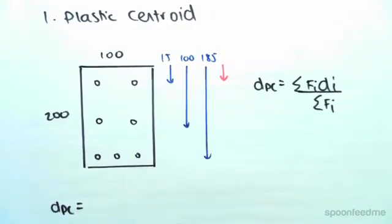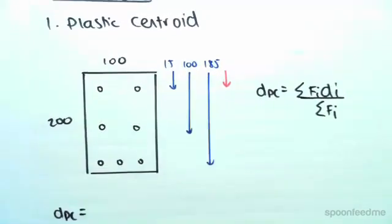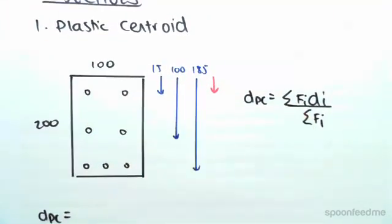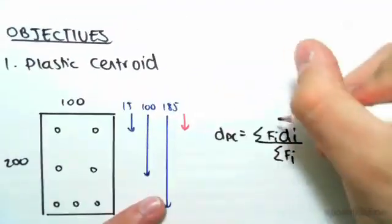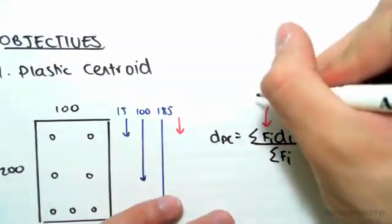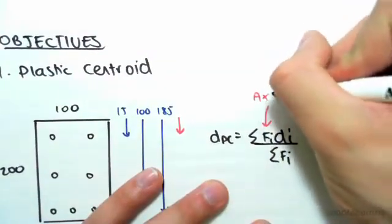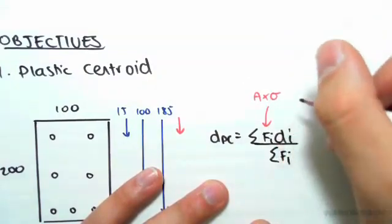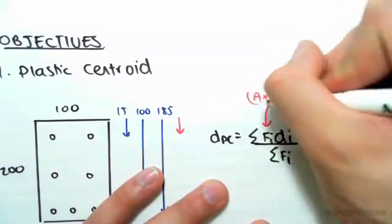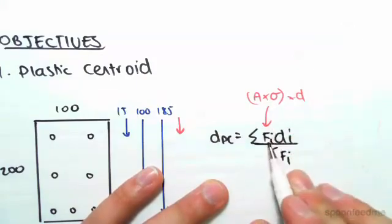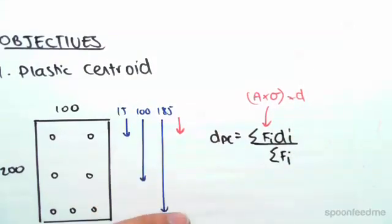Now, we'll work with the steel first. So sum of the force, we're going to be using the sum of the force is equal to area times stress, so that's the same as force, and then we're going to be multiplying that by the distance. So area times stress is the same as force. Force equals stress times area.